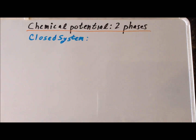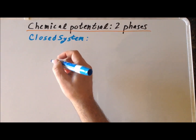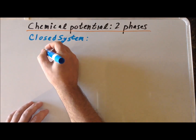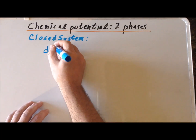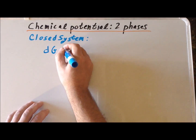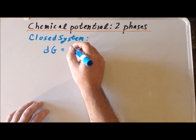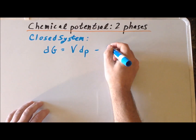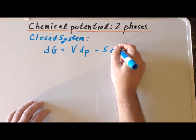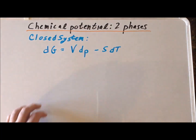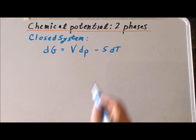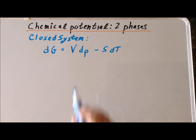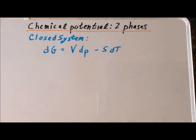Recall that for a closed system, our expression for the differential of the Gibbs energy, dG, is equal to VdP minus SdT, where V is the volume, S is the entropy, P is the system pressure, and T is the thermodynamic temperature.